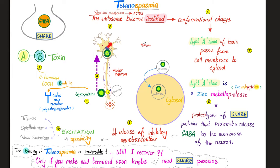Once the endosome reaches the soma, it becomes acidified, causing a conformational change. The light A chain — the active part of the toxin — passes from the membrane into the cytosol of the neuron and begins acting via its zinc metalloprotease activity to break down SNARE proteins. SNARE proteins are responsible for the release of neurotransmitters into the synaptic cleft.